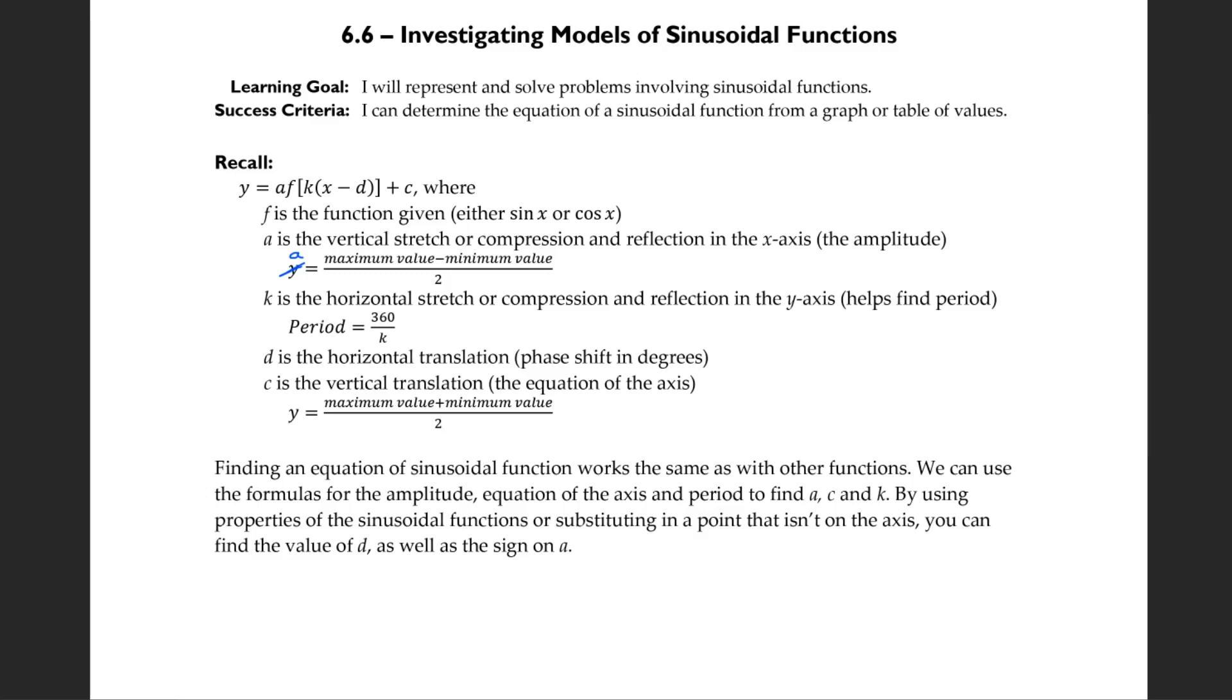Finding an equation of a sinusoidal function works the same as with other functions. We can use the formulas for the amplitude, equation of the axis, and period to find a, c, and k. By using properties of the sinusoidal functions, or substituting in a point that isn't on the axis, you can find the value of d as well as the sine of a.